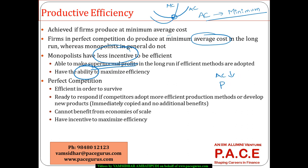Whatever the price the monopolist is setting, the average revenue is much higher. The difference contributes to the profit per unit, and with the increase in the number of units, the overall profit is completely maximized. So the more productive efficiency followed by a monopolist — though not required — the more effective the production method, and the profit generation potential in the long run: generating supernormal profits becomes a very easy situation for a monopolist.